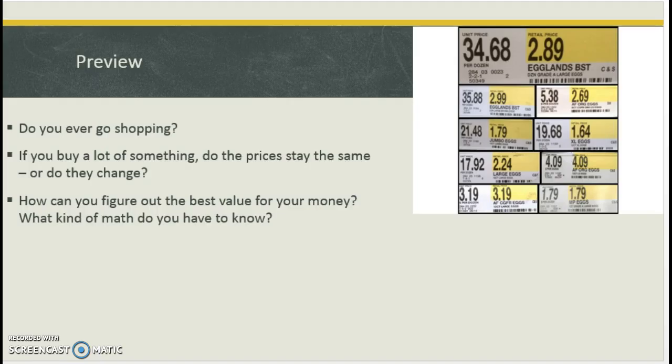So a big part of this, if you've ever gone shopping, one thing you should always look for when you do is the unit price. That would be how much for each one of something. So if you buy a lot of something, do the prices stay the same or do they change? Something we'll look at. There are values hidden and the way you shop. You have to figure out the best value for your money. What kind of math do you have to know?